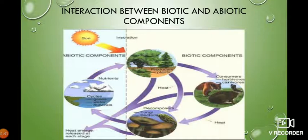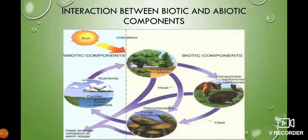Looking at the biotic components, we have the green plants, or the producers. They make food with the help of sunlight. The green plants take the sun's energy, water from the soil, and minerals from the abiotic components to make food. This food is passed on to the consumers — all the herbivores and carnivores — who also take water from the abiotic components.